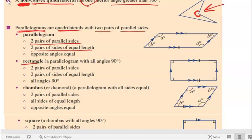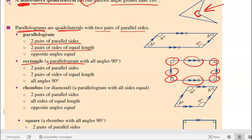A rectangle is a parallelogram, but all the angles are 90 degrees. These are all types of parallelogram. When you have a parallelogram with 90-degree angles — two sides of equal length and parallel, and the other two sides of equal length and parallel — it's a parallelogram with the special name: rectangle.